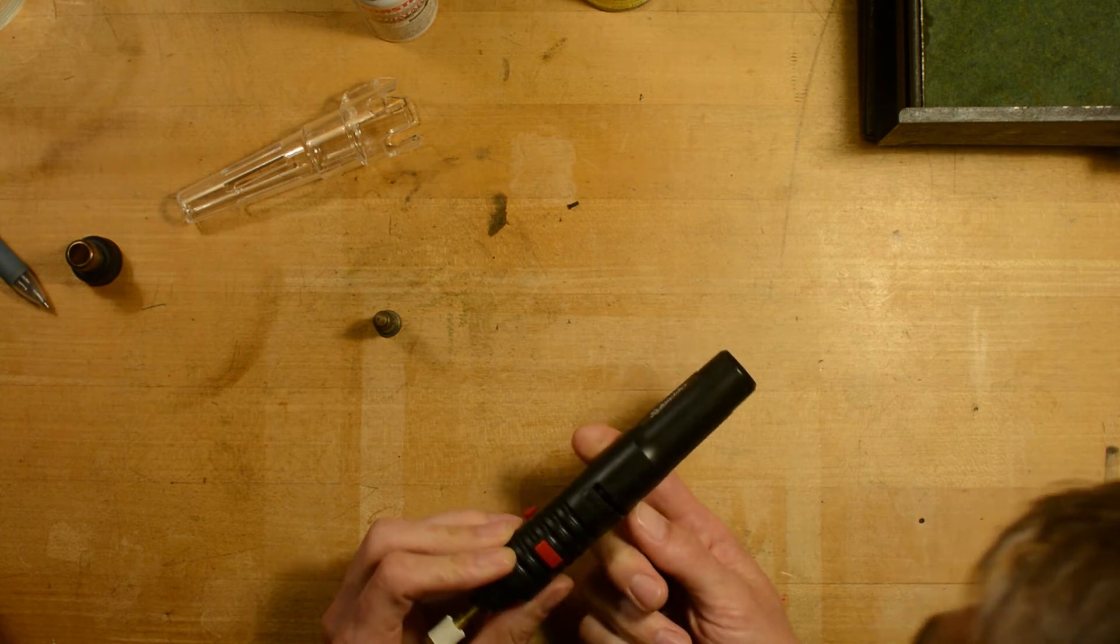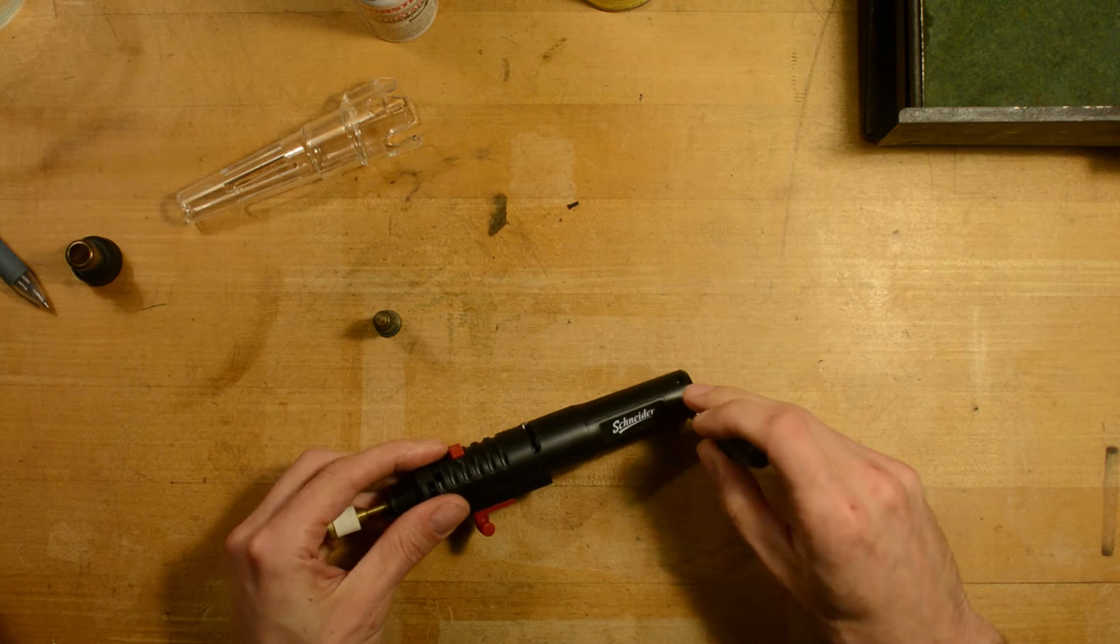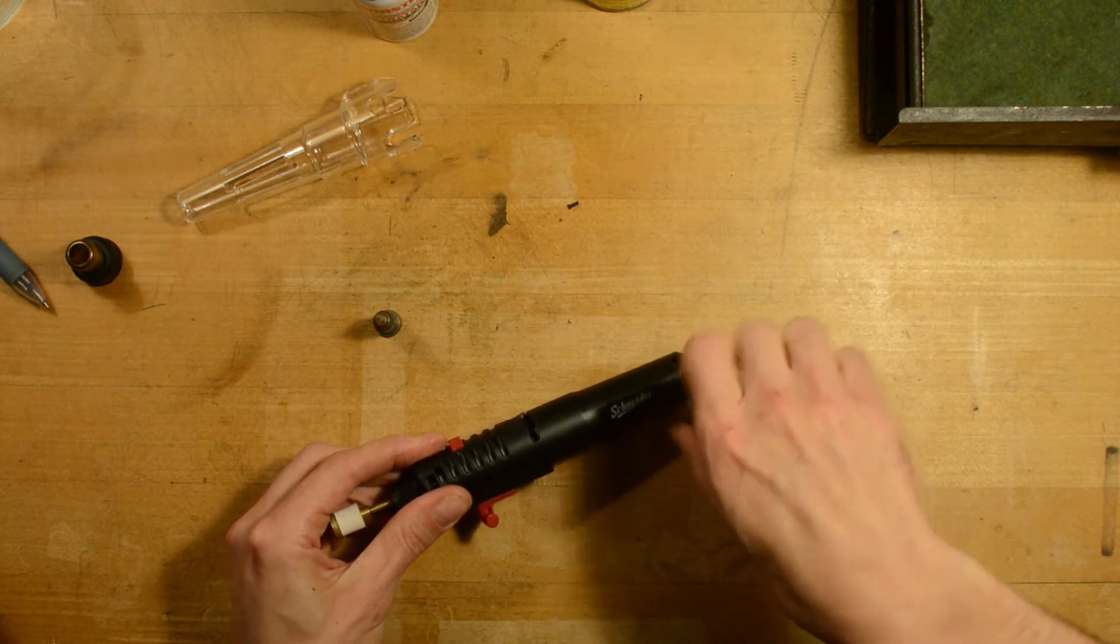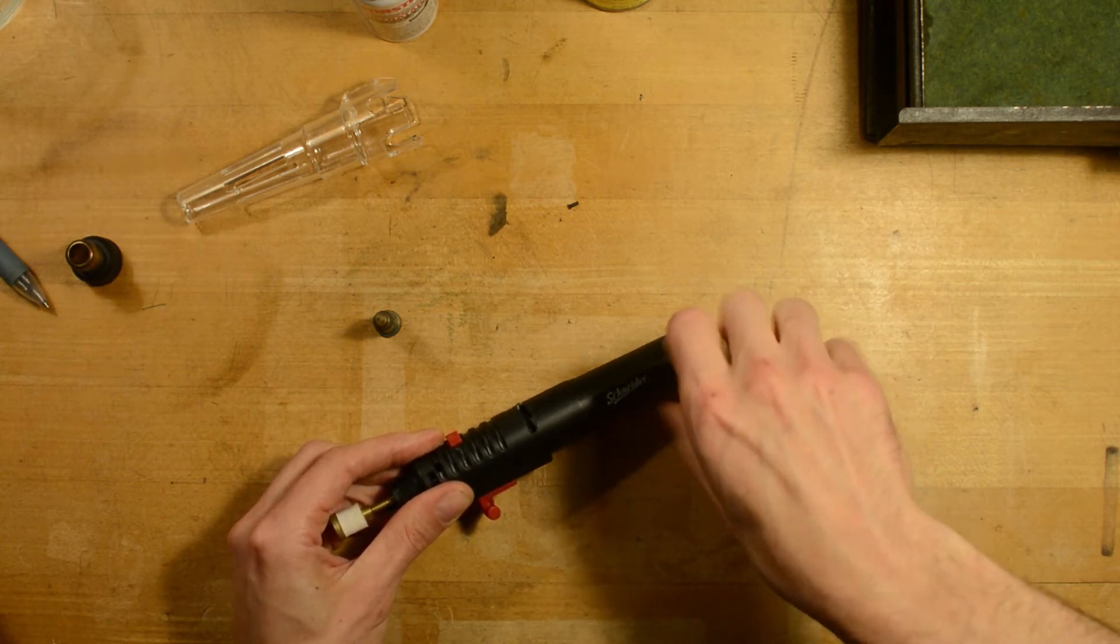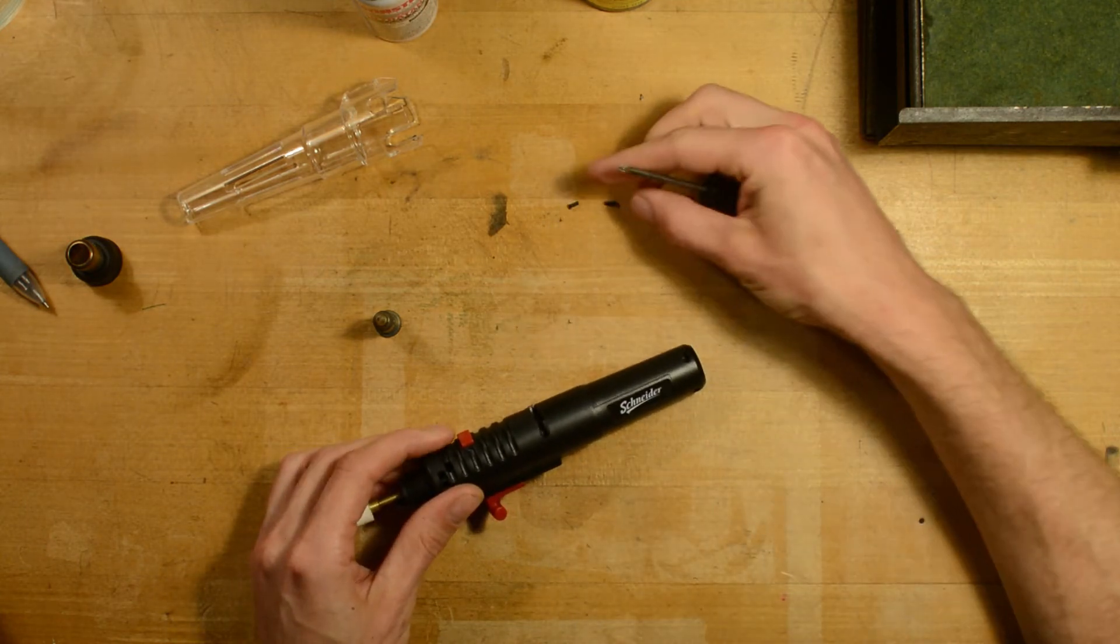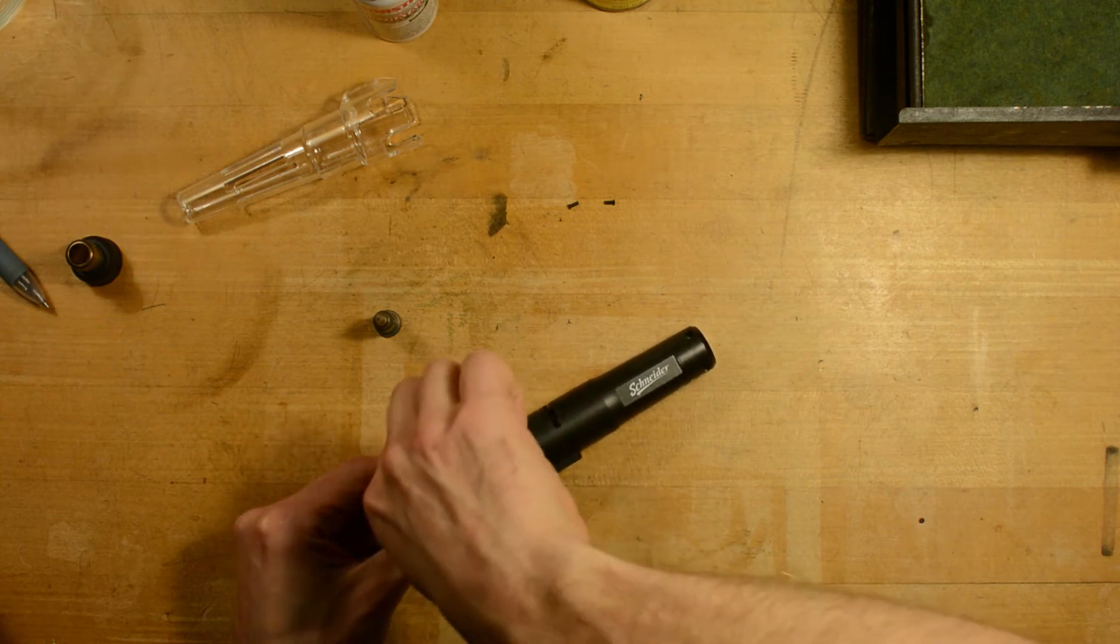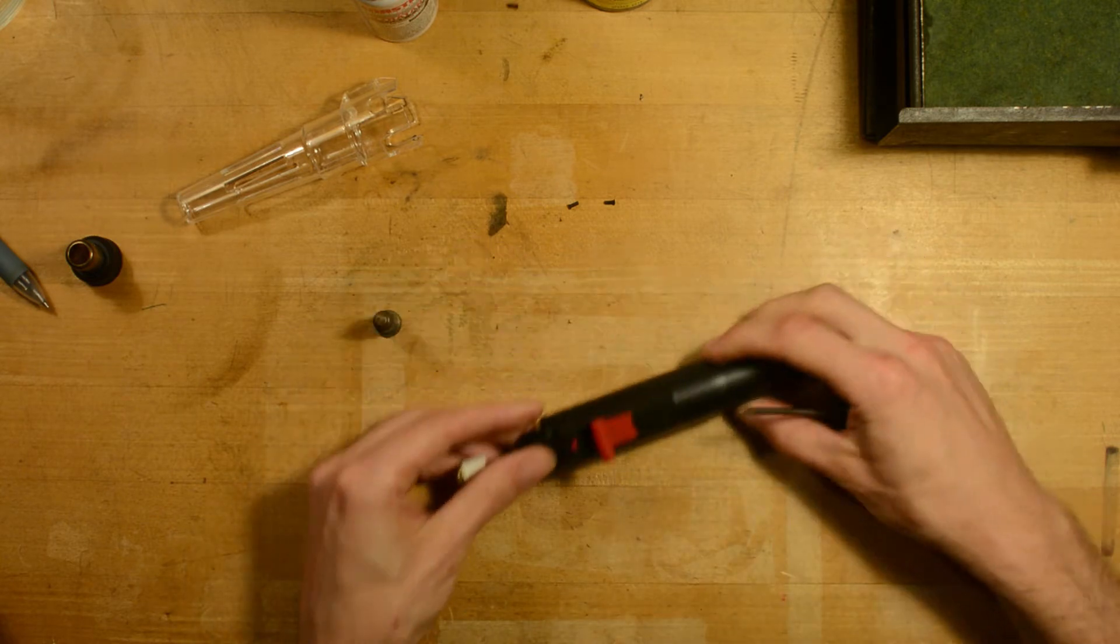But I ended up taking it apart to see if there was an easier way to do it. I wasn't planning on grinding it initially - I thought maybe I could just make an adjustment on the inside, reposition the little knob so that it was adjusting the gas flow a little bit lower.